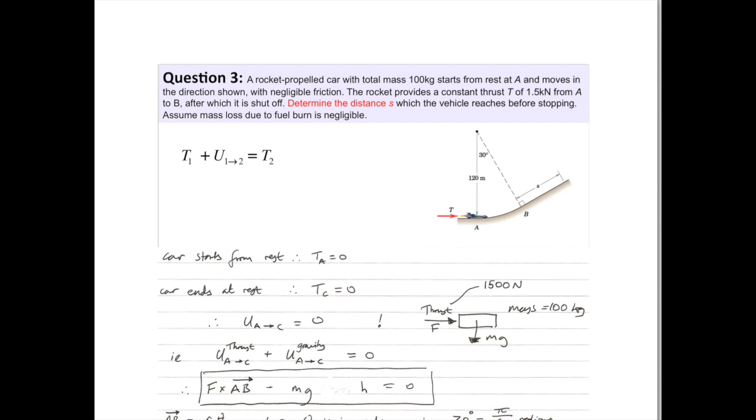OK, so this is an example of a work energy balance. Car starts at A, constant thrust is applied as it goes up the hill between A and B. Thrust stops and then it coasts up the hill until it comes to a stop at S, distance S, up the slope from B. You've got to find S.